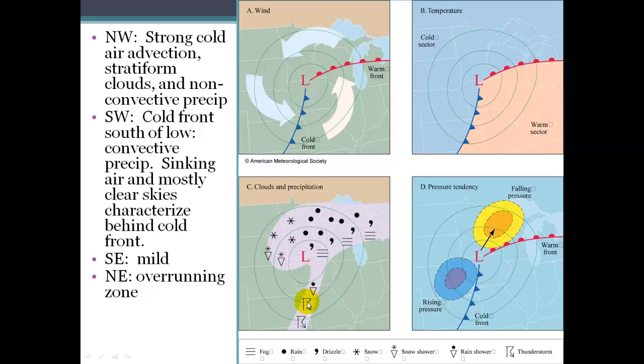The squall line is just a line of thunderstorms that literally is just right in front of that whole cold front. So this is our cold front. And then behind the front, we have cold air. And it's mostly sinking air, so clear skies, cooler temperatures, and rising pressures behind that cold front.